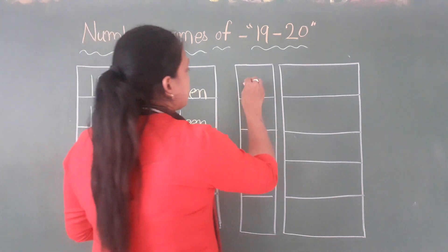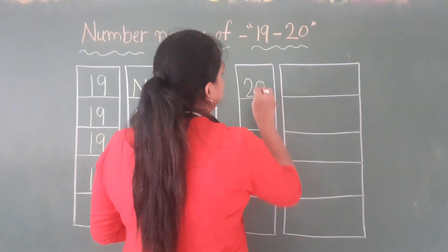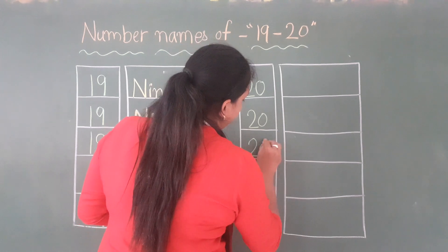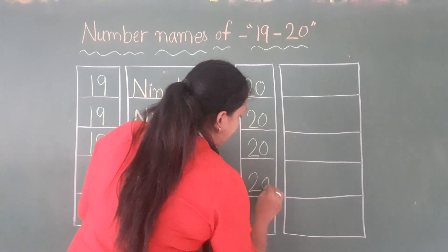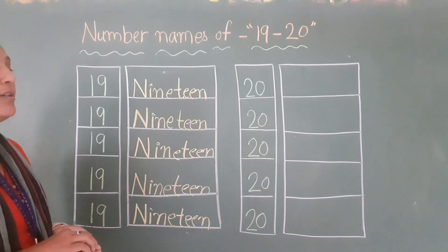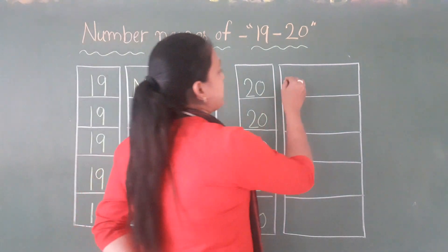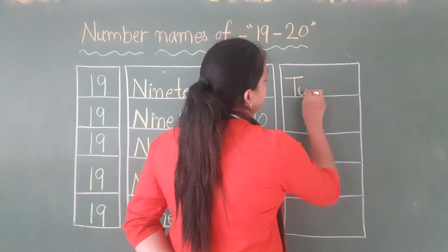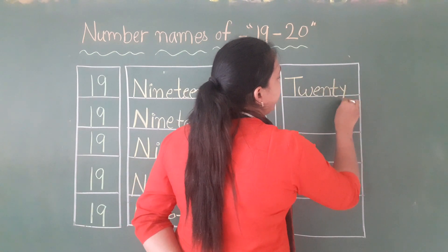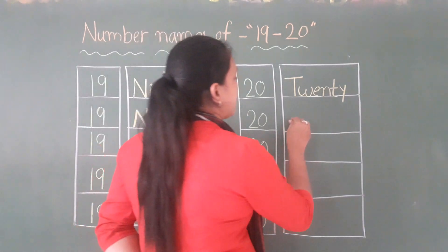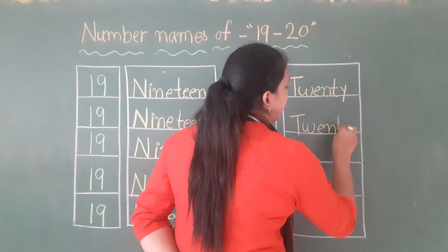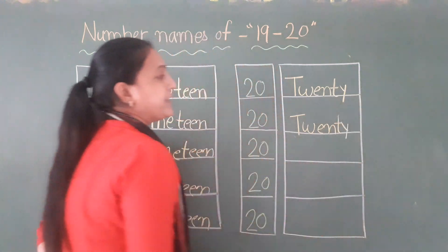Phir aage likhenge hum 20. 2, 0 — 20. 2, 0 — 20. 2, 0 — 20. Kya spelling hota hai 20 ka? T-W-E-N-T-Y. 20. Kya spelling hota hai? T-W-E-N-T-Y. 20.